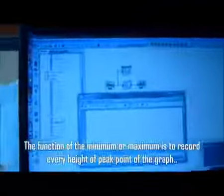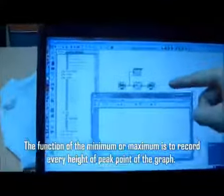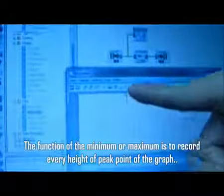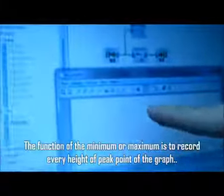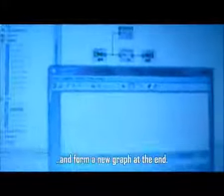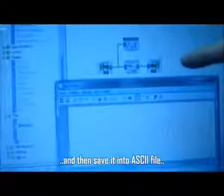We open the DF file that we saved from previous one and that file is our displacement versus time graph. The function of the minimum or maximum is to record every peak point of the graph and form a new graph at the end. Then save it as an ASCII file.